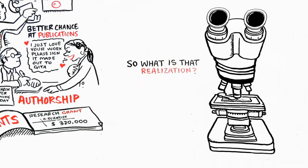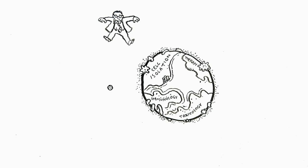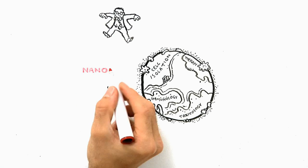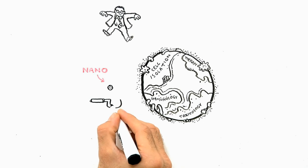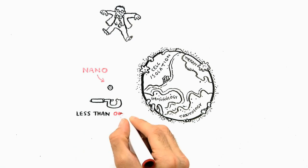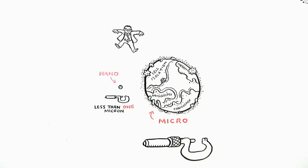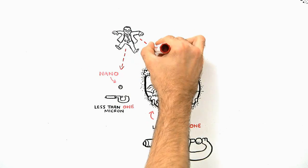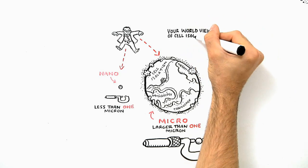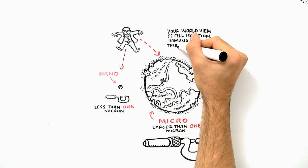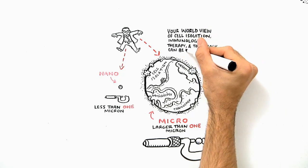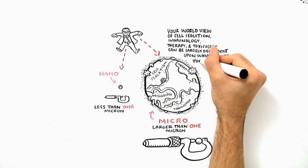So what's this realization? It's not that there is just one, but two worlds of technology when it comes to cell isolation — two different planets. There is a nano-sized planet, where particles we use are usually less than 1 micron, and there's a micro-sized planet, where the particles we use are larger than 1 micron. Your view of cell isolation, immunology, therapy, and toxicology can be largely dependent on which planet you live on.